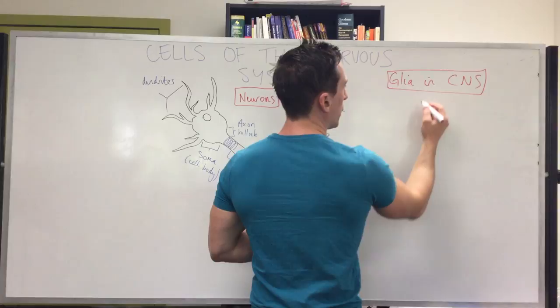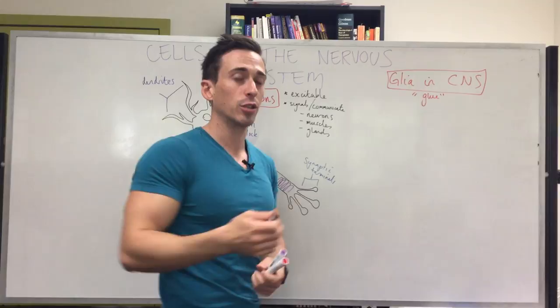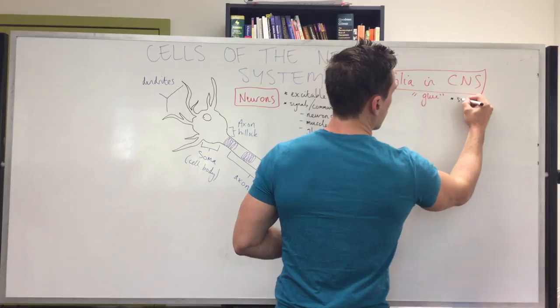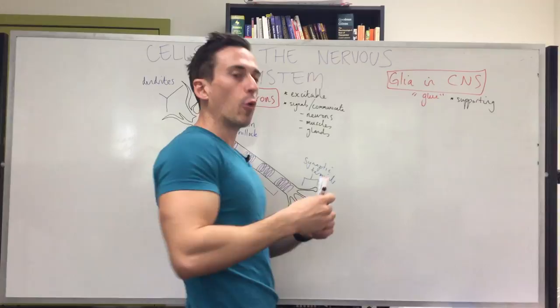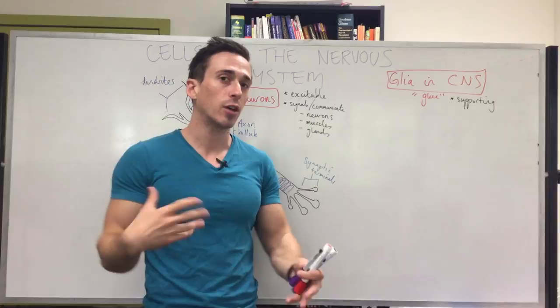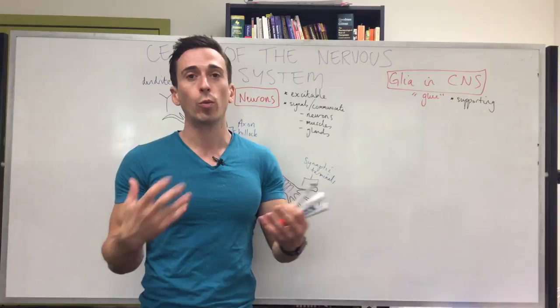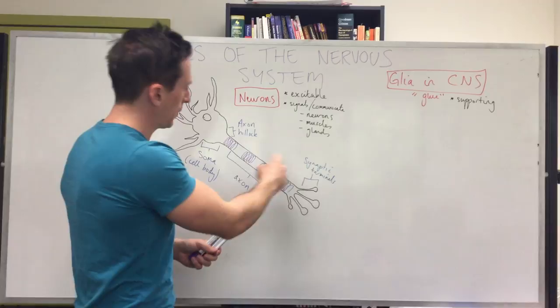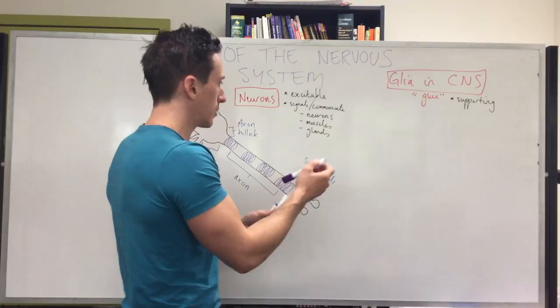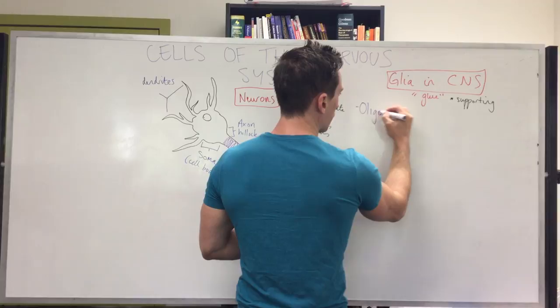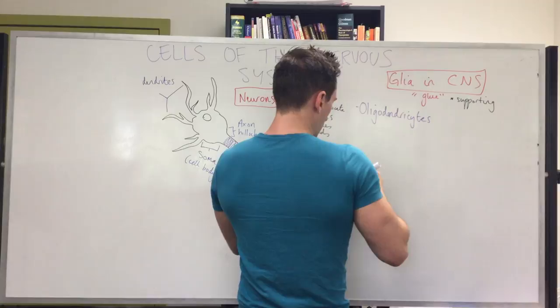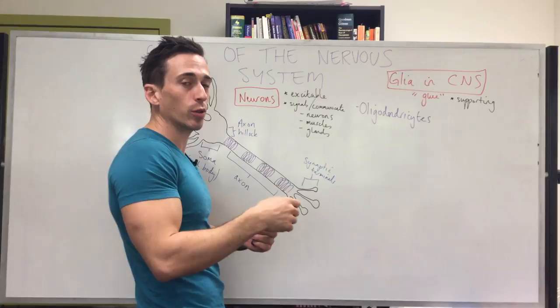Now let's talk about the other cell types within the nervous system, which are called glia. Looking at glia within the central nervous system: glia is Greek for glue, and these are the supporting cells of the nervous system. They help maintain the internal environment around the neuron. There are many different types of glia with many different roles, but overall their role is to support the neurons. The first type wraps the axons of neurons within the central nervous system — these are called oligodendrocytes.